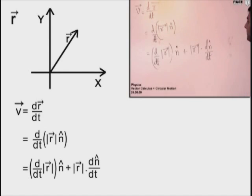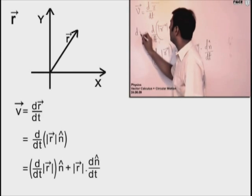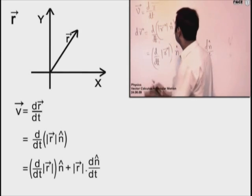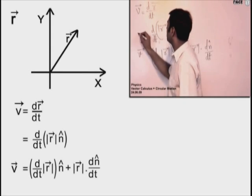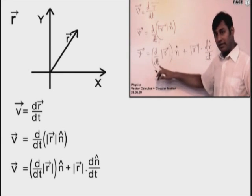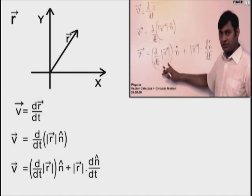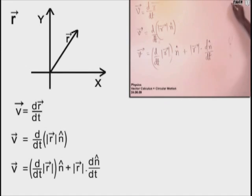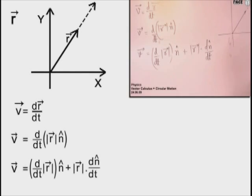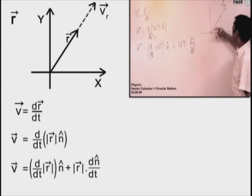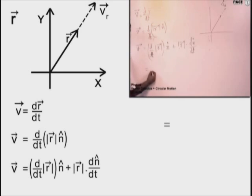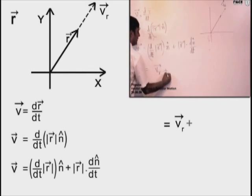So I'll write it like this. This first term is the velocity component. This is the rate at which the magnitude of the position vector (radius vector) is changing, and it is in the direction of n̂. If I show this on a graph — if this is r vector, the rate at which the length of this vector is changing, in this direction, it represents velocity in that direction. I call it vr, the radial velocity — velocity along the direction of the radius vector.